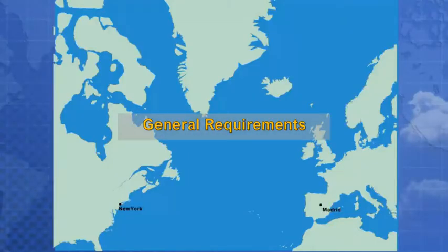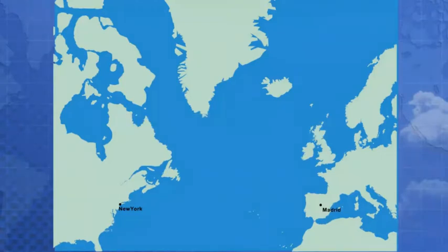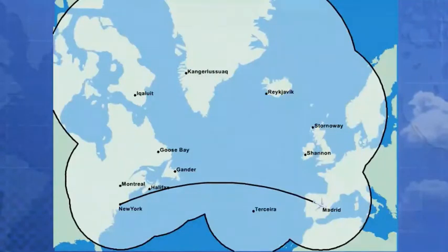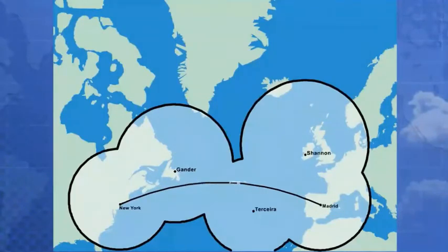General Requirements. The basic fundamental ETOPS concept can be described as follows: for a desired route, an allowable ETOPS area of operation is determined by locating adequate airports that can be utilized as en-route diversion airports. Engine-inoperative still-air diversion distance circles are drawn around these airports such that the planned route of flight is enclosed within the circles. Sufficient fuel is carried to complete a diversion from the most critical point along the route to a selected en-route diversion airport.